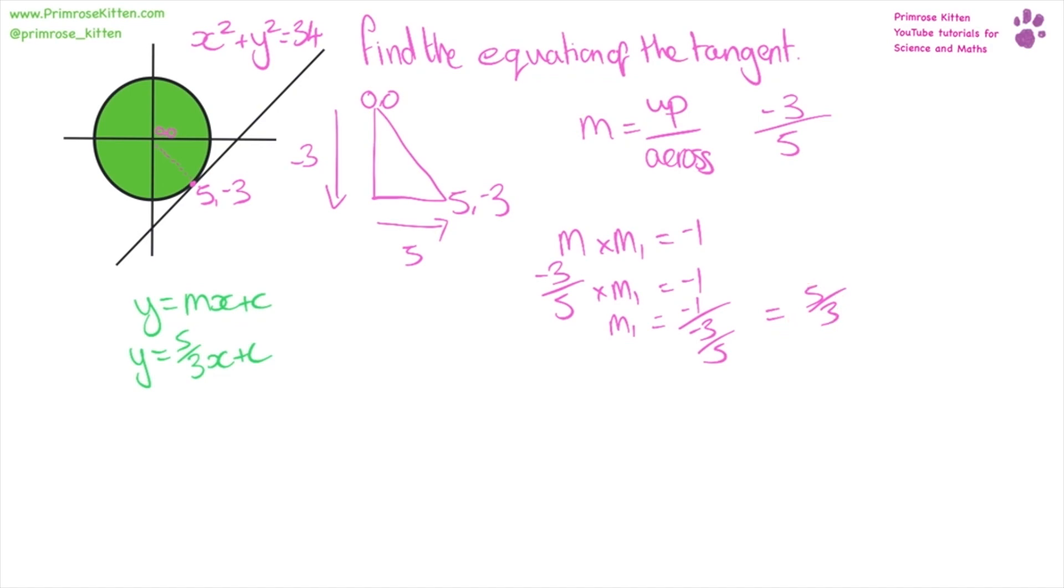We know our x and our y because we have a set of values here. So, we can say y equals five over three x plus c. We can pop in our y value, which is minus three, our gradient and our x value. We can multiply that out. So, we have minus three equals 25 over three plus c. Take the 25 over three over to the other side and what we end up with is minus 34 over three equals c.